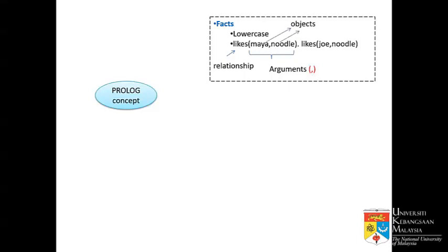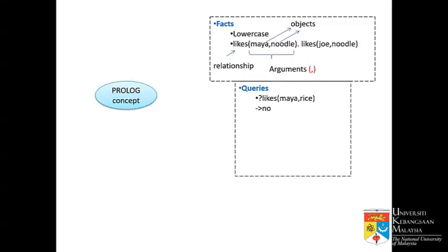You can also use conjunction — you can put 'and', 'or', etc. We also have queries. After we declare facts, we can give a query. We start our queries with a question mark. So for example, does Maya like rice? The compiler will check from the facts we have declared, and it sees that there's no rice in the second object — there is Maya, but there's no rice. So it will output 'no'.